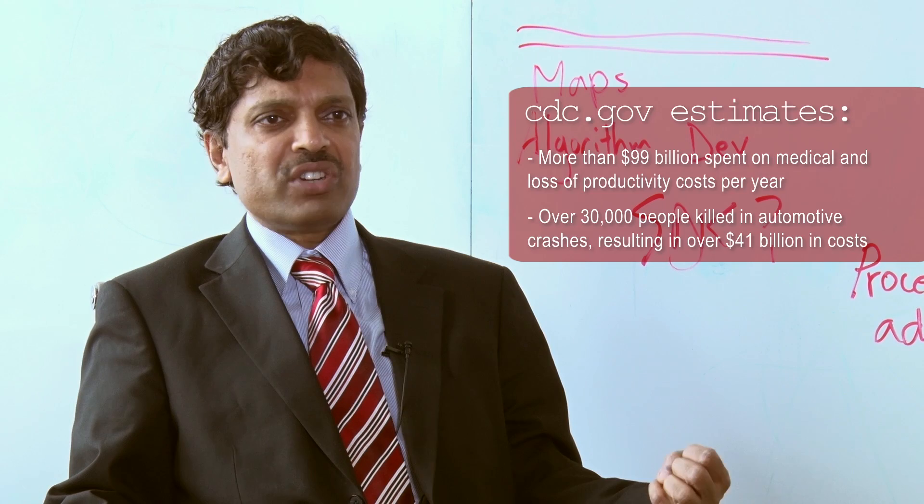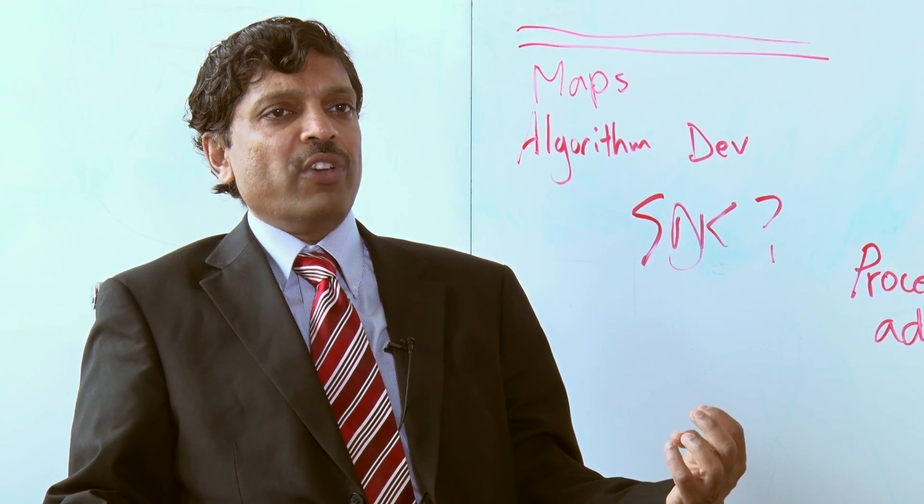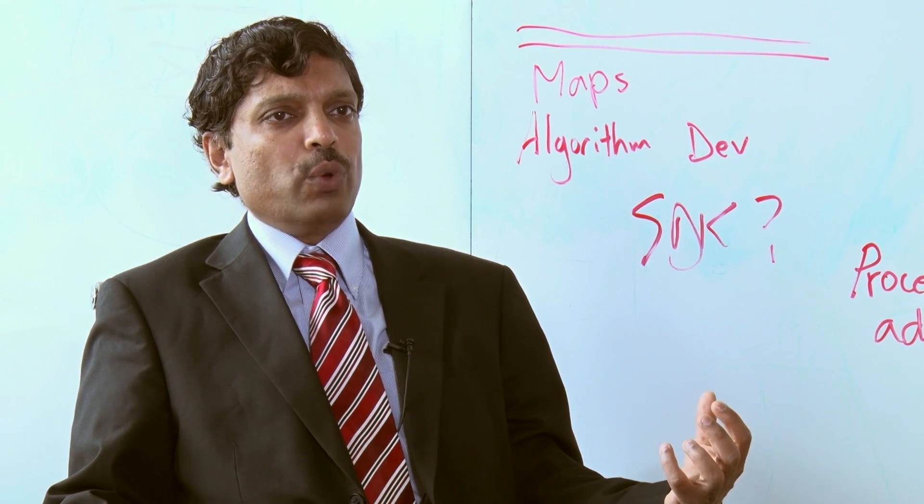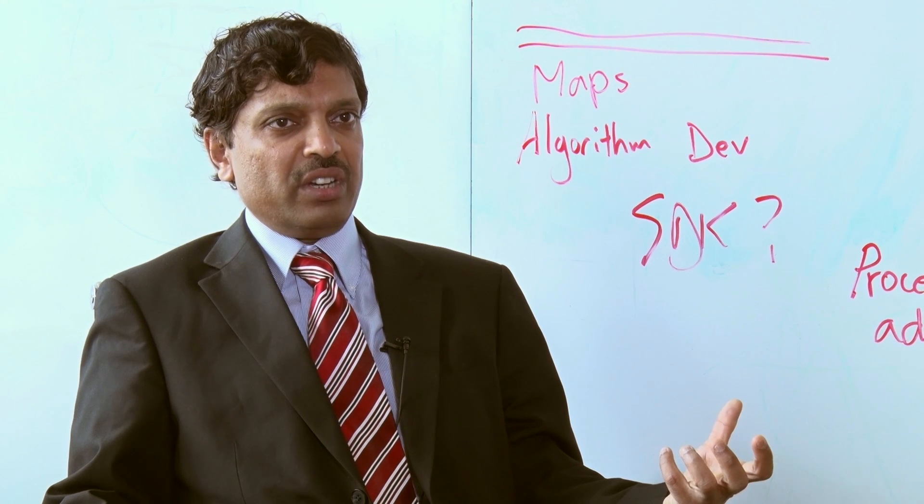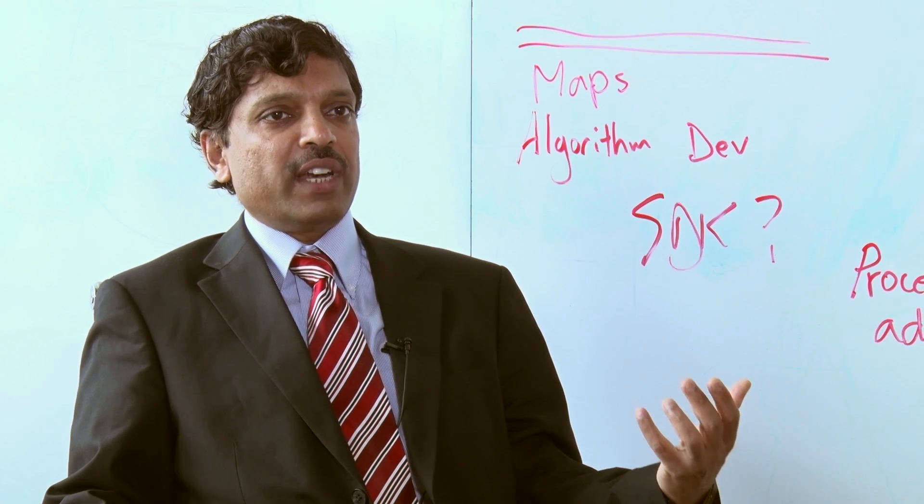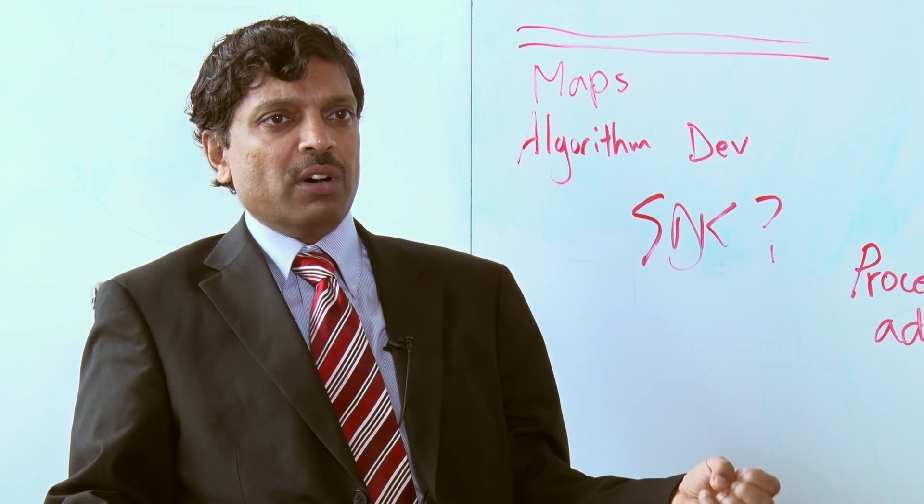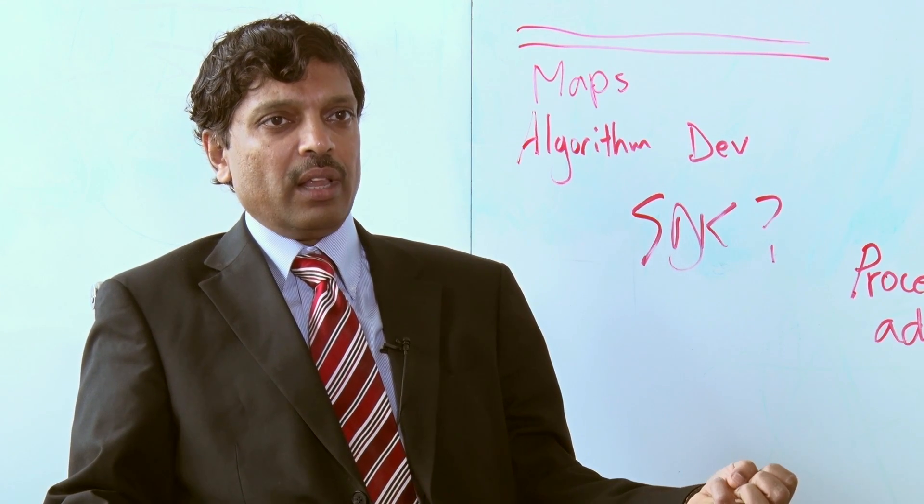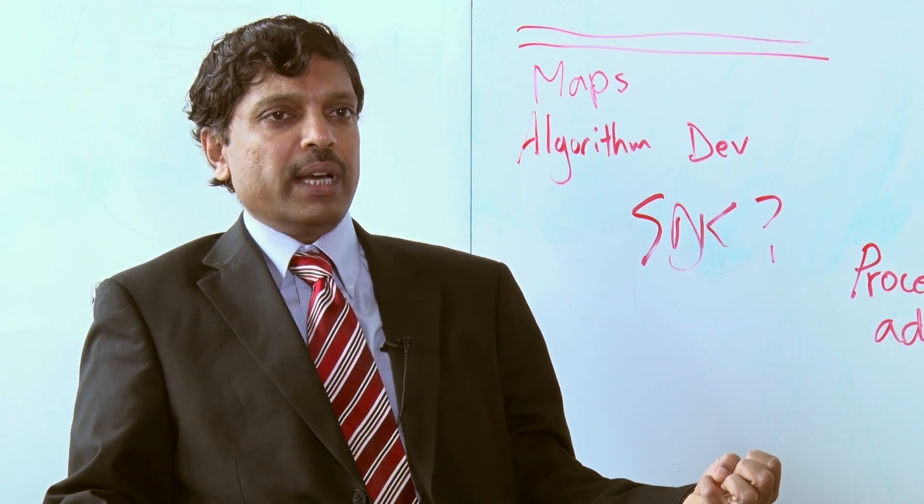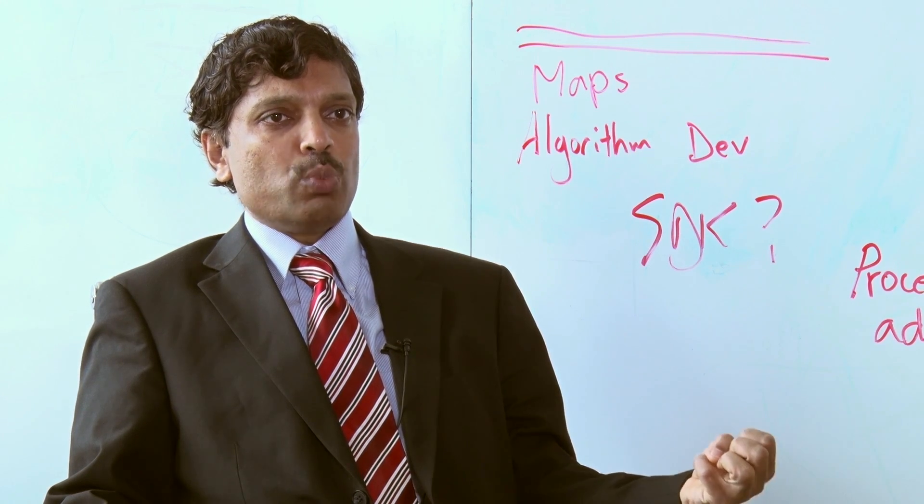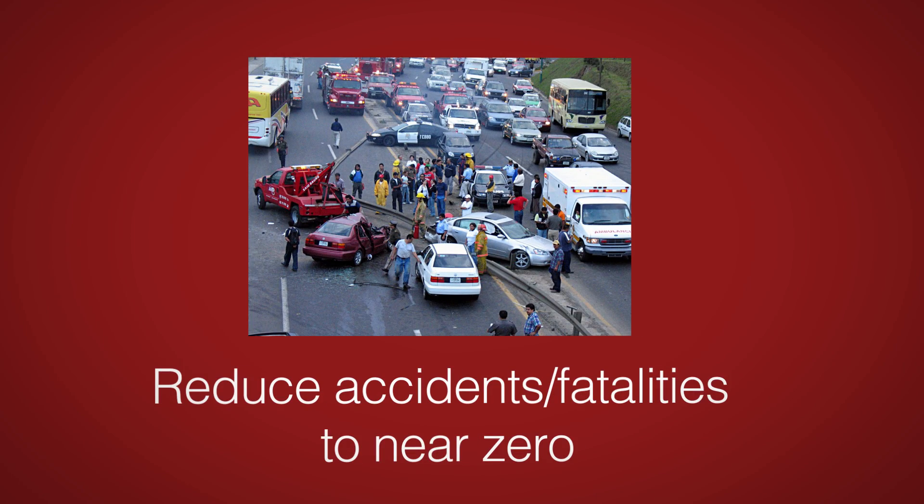Humans can be distracted very easily. So if we can take humans out of the driving equation, we expect that these fatalities, injuries, and accidents will drop dramatically over time. So really our holy grail is to take the number of fatalities from automotive accidents towards zero over time.